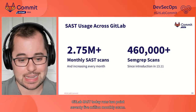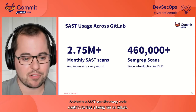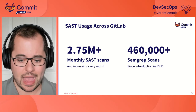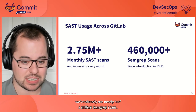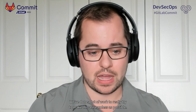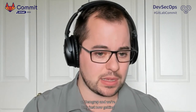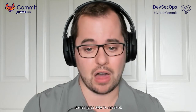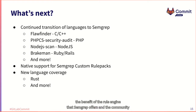This also sets us up to enable new language support and expand the number of languages we can cover. To give you a sense of scale: GitLab SAST today runs 2.75 million monthly scans — a SAST scan for every code contribution being run on GitLab. Of those 2.75 million, in the past couple of months we've already run nearly half a million Semgrep scans. It's been phenomenal to see the immediate success of this tool. In most cases, developers on GitLab have not had to do anything to start leveraging the benefits of Semgrep.